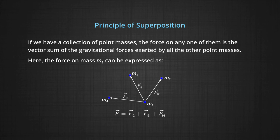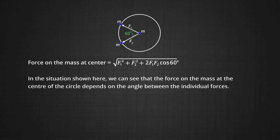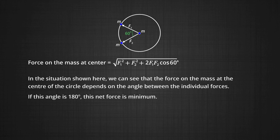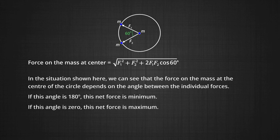If we have a collection of point masses, the force on any one of them is the vector sum of the gravitational forces exerted by the other point masses. The force on the mass at the center of the circle depends on the angle between the individual forces. If this angle is 180 degrees, the force is minimum; but if this angle is zero, the net force on the central mass becomes maximum.